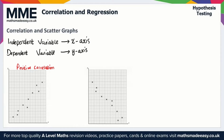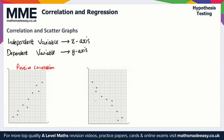We also have negative correlation. With negative correlation, we start in the top left and finish down in the bottom right. As x increases, the y variable decreases. So that's negative correlation.